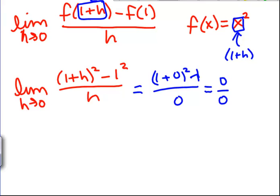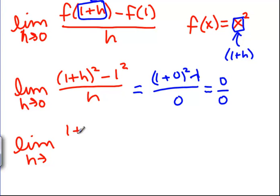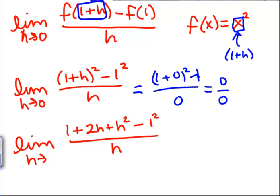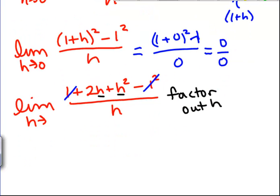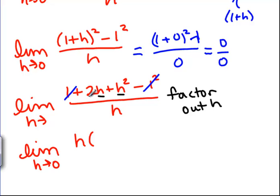Whenever your function is a polynomial, the algebra is to expand out the top as far as you can. So we FOIL 1 plus h squared to get 1 plus 2h plus h squared, minus 1 squared, divided by h. The ones cancel. Now we should see an h in every remaining term, so we factor it out: the limit as h goes to 0 of h times 2 plus h, divided by h.